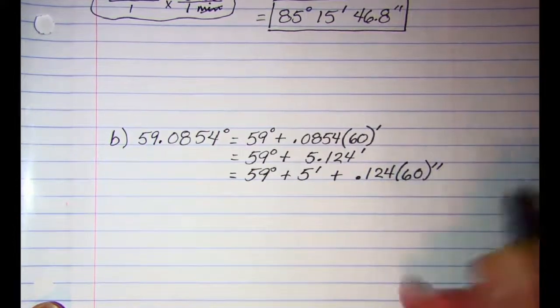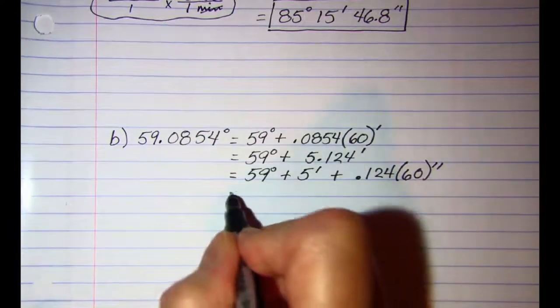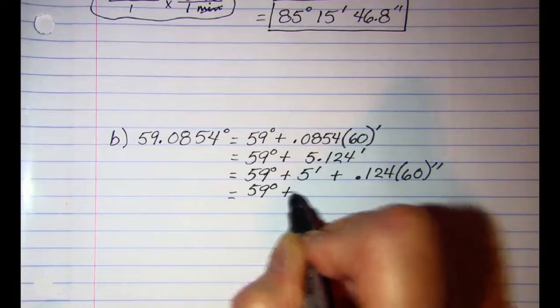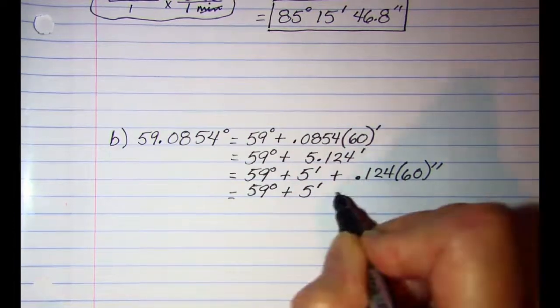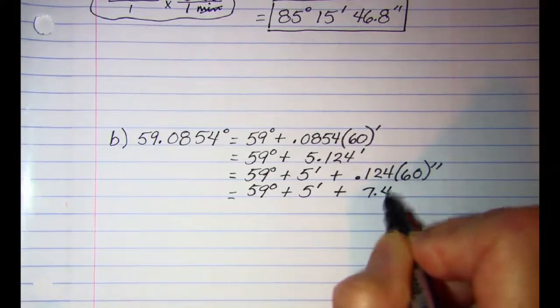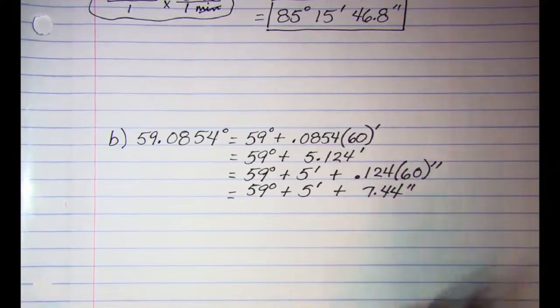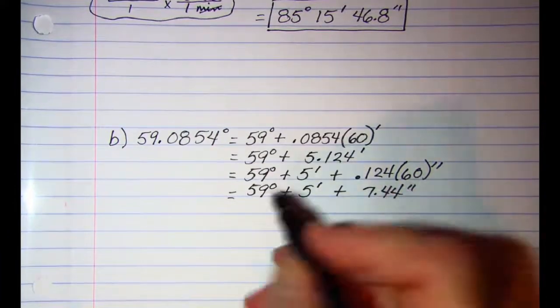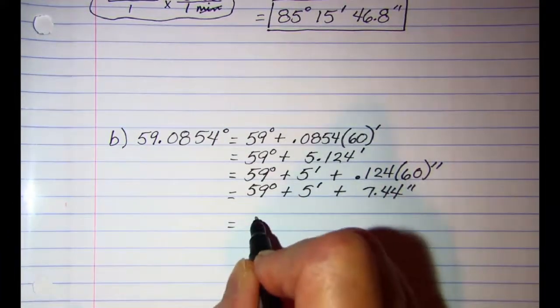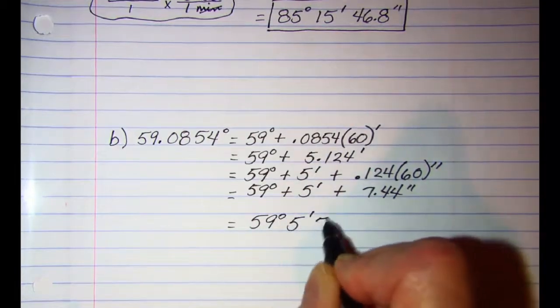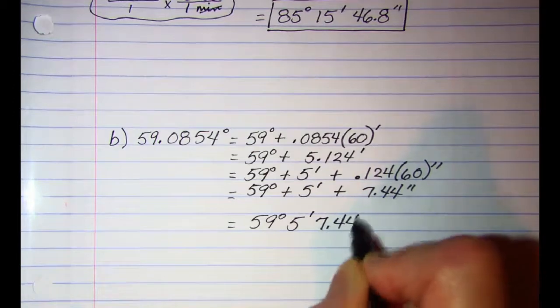59 degrees plus 5 minutes, plus 7.44 seconds, and then write that without the plus sign, we have 59 degrees, 5 minutes, 7.44 seconds.